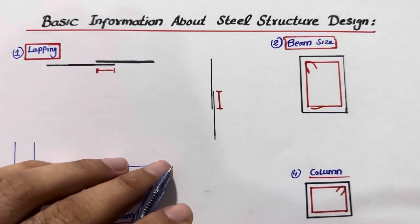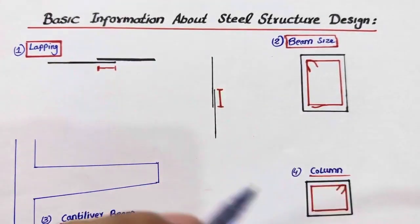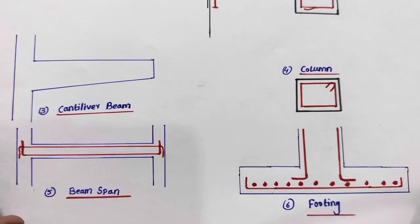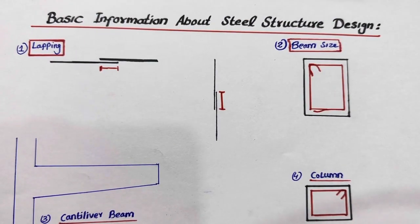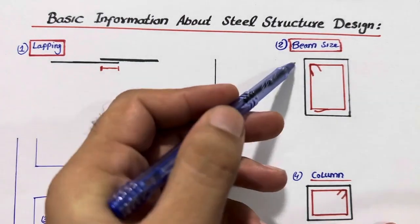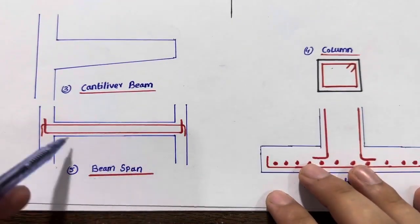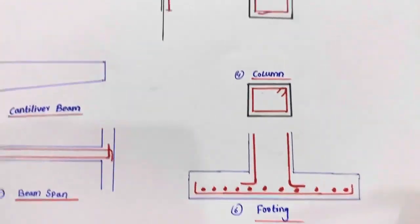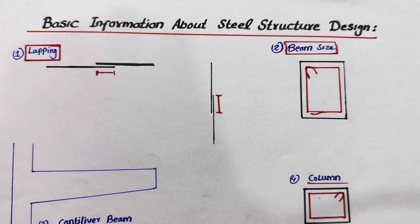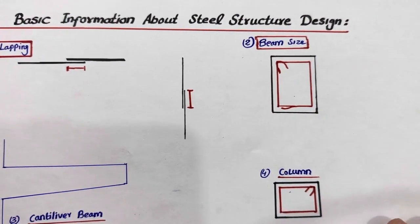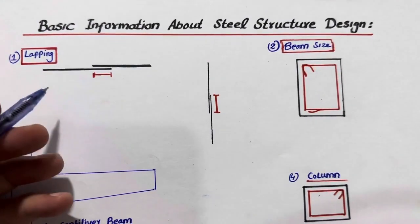Welcome back to Civil Engineers YouTube channel. Today in this short practical video I will guide you on basic information about steel structure design, whether you are working on a construction site or studying. Topics covered include lapping in steel structures, beam size, steel reinforcement, cantilever beam, column details, beam span, and footing details. Watch till the end, and if you are new, please subscribe and like the video.